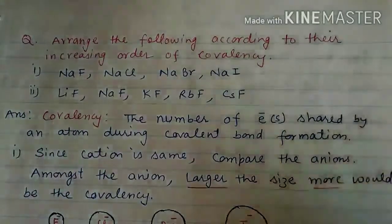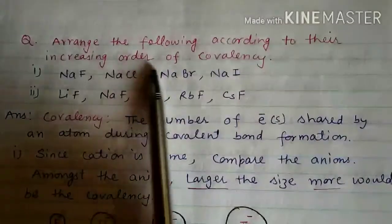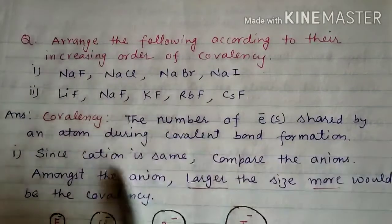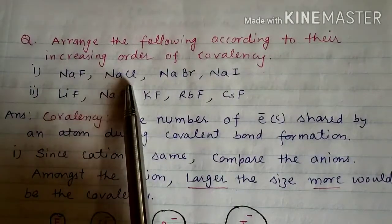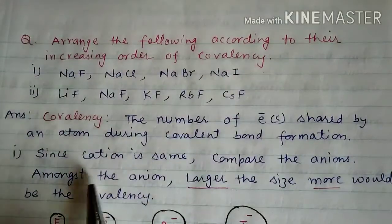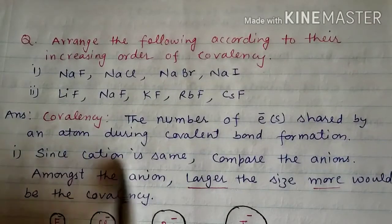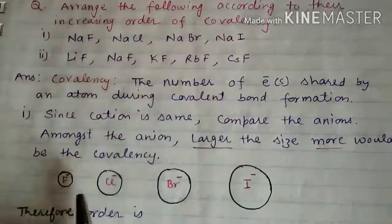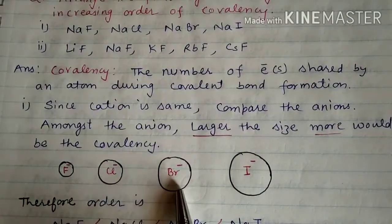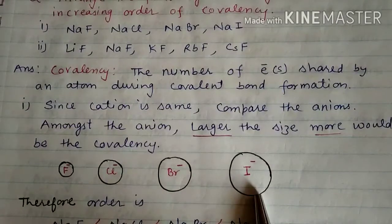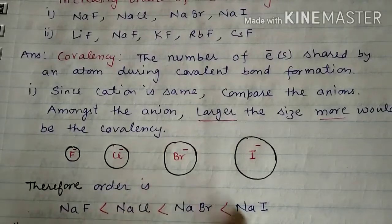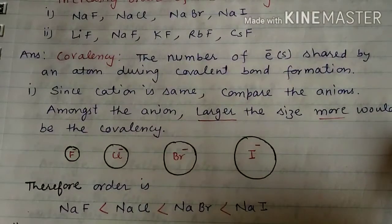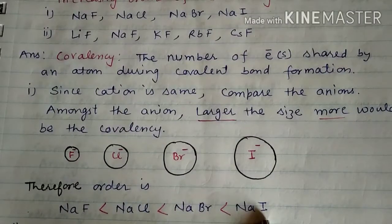Now let us arrange NaF, NaCl, NaBr, and NaI in increasing order of covalency. Since the cation Na⁺ is the same in all cases, we compare the anions. According to Fajan's Rule, larger the size of the anion, greater the covalency. Fluoride has the smallest size, and iodide has the largest. Therefore the order of increasing covalency is: NaF < NaCl < NaBr < NaI.